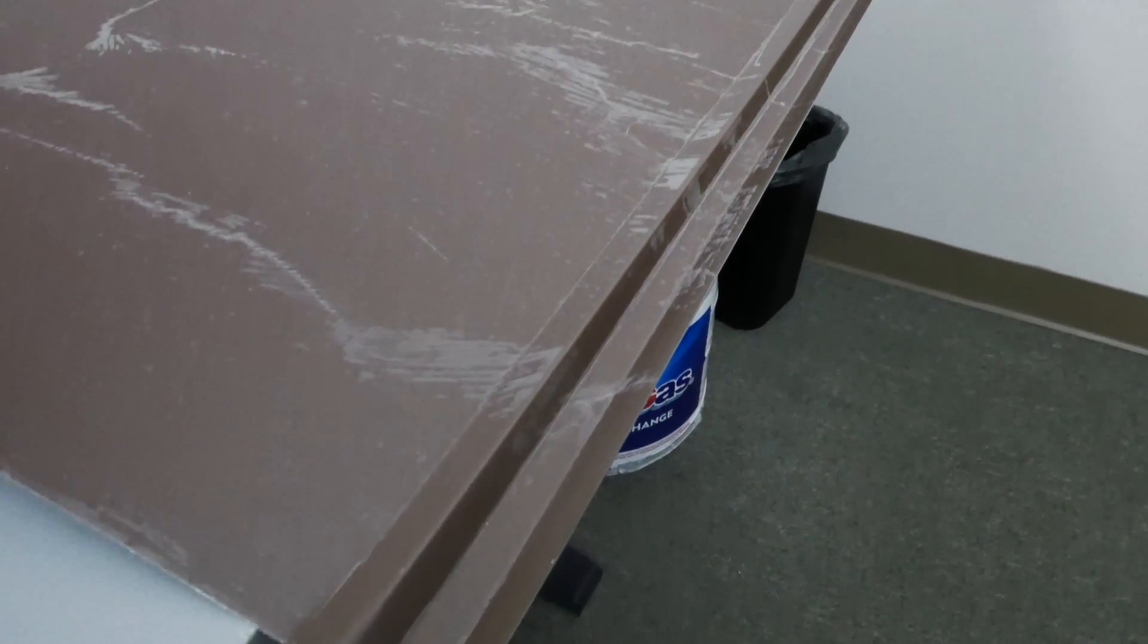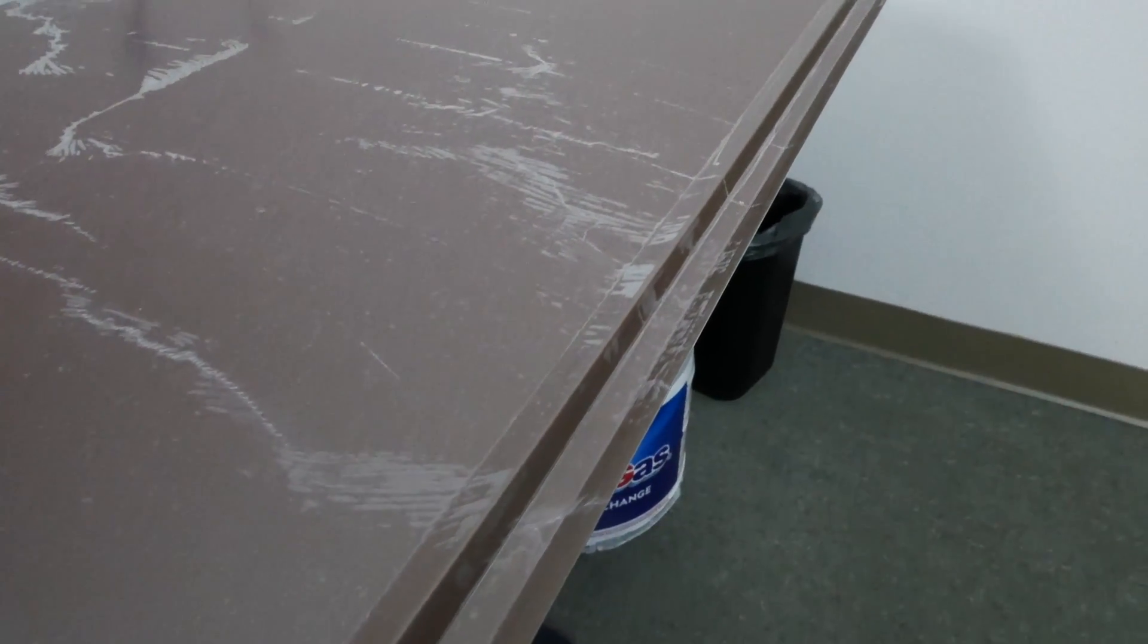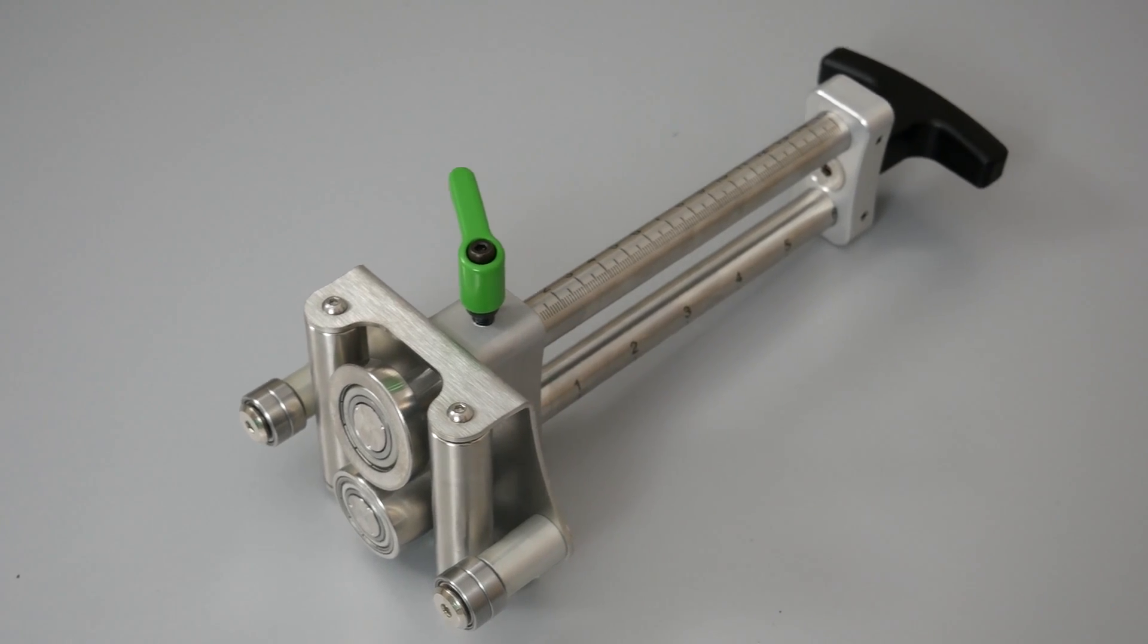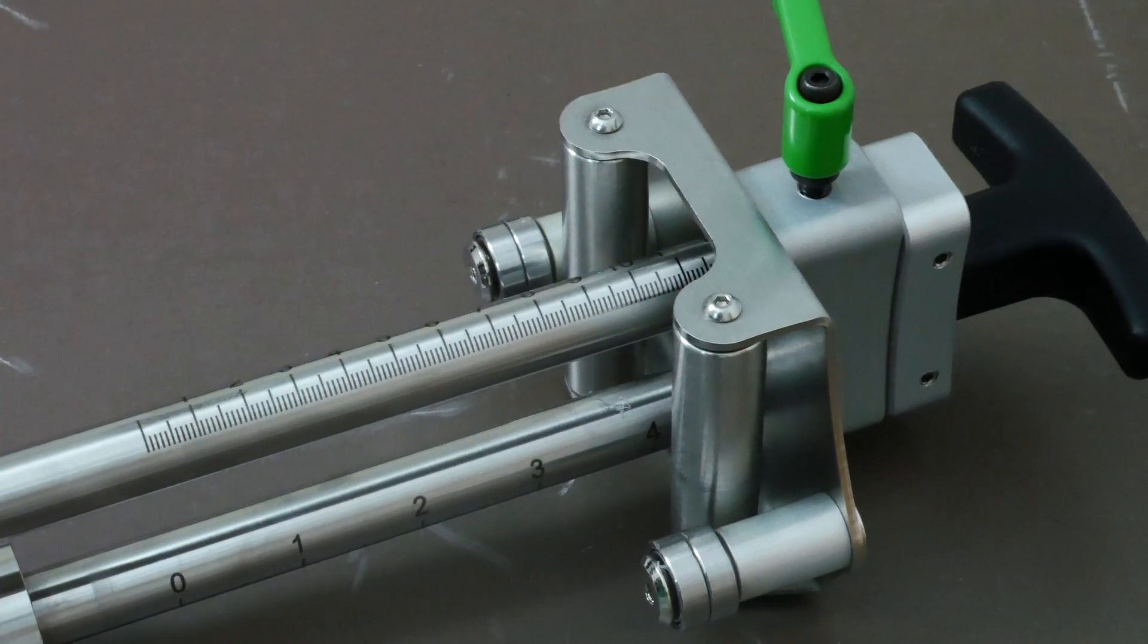The special canted roller allows over bending to achieve 90 degree bends. This tool works great on steel, copper, aluminum and zinc in thicknesses up to 32 inches.